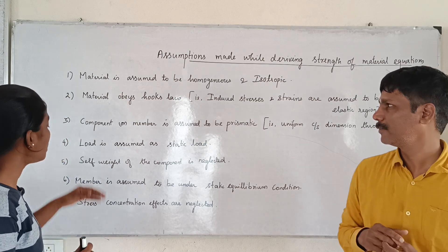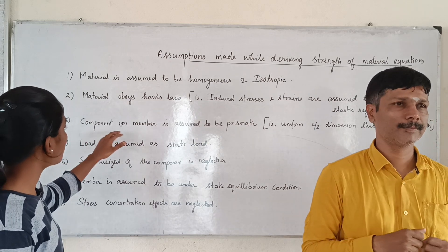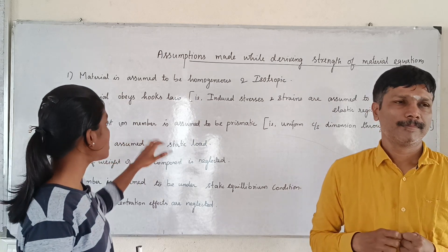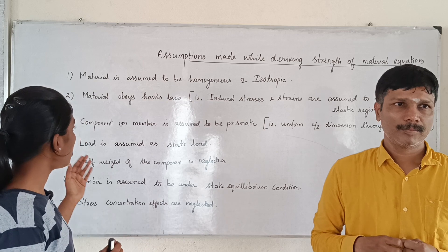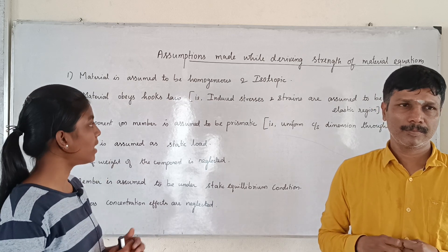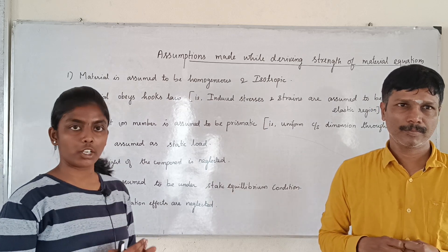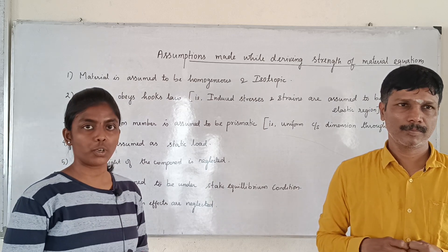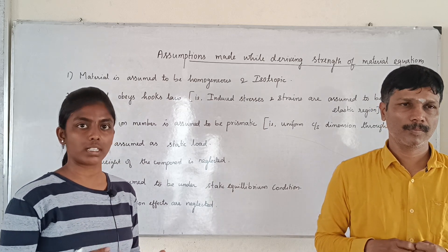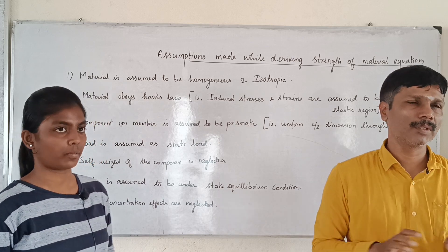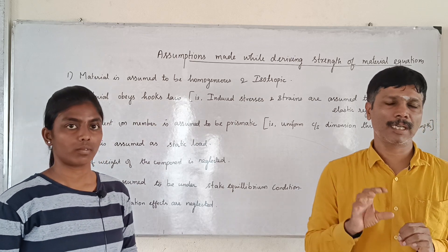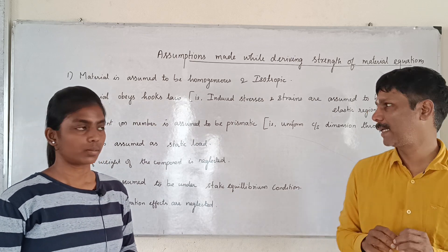The next assumption is that the components or members are assumed to be prismatic. If it is prismatic, the cross-section is uniform throughout the length.